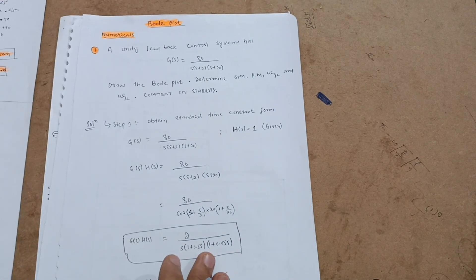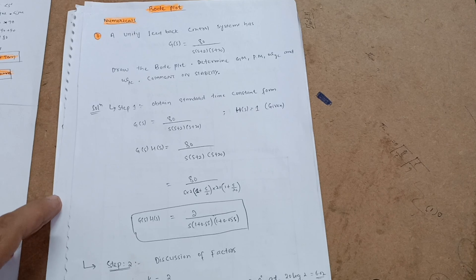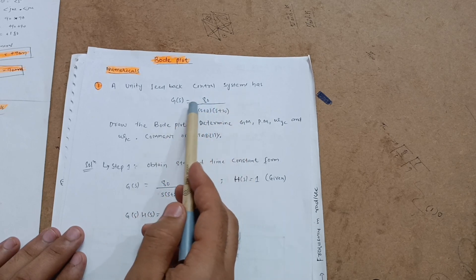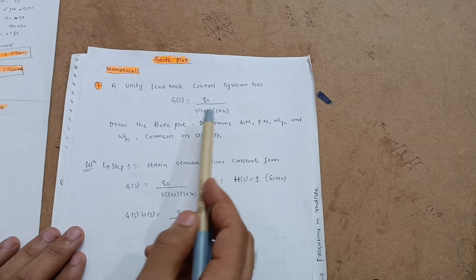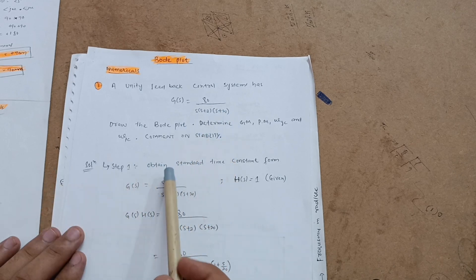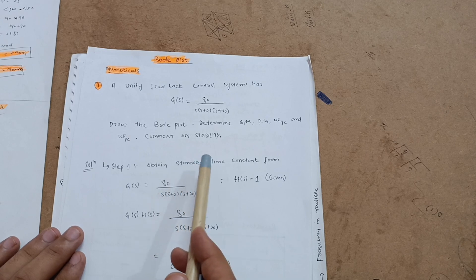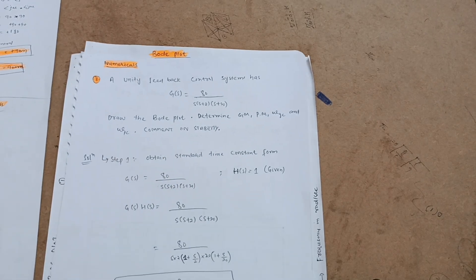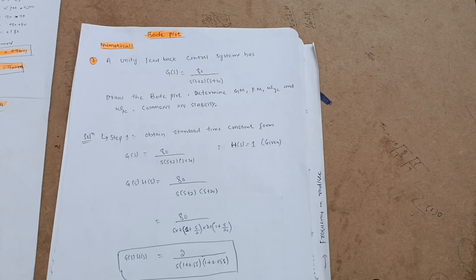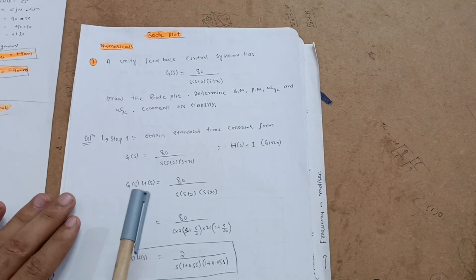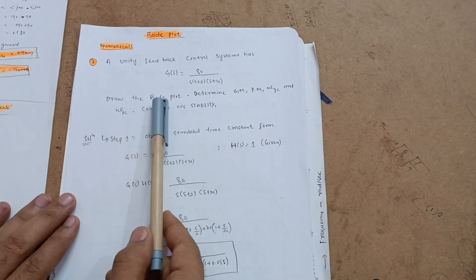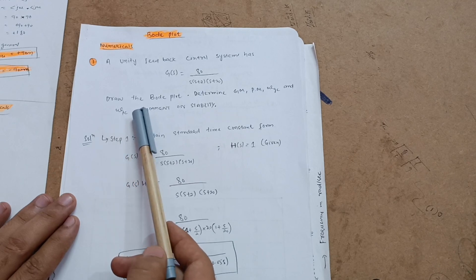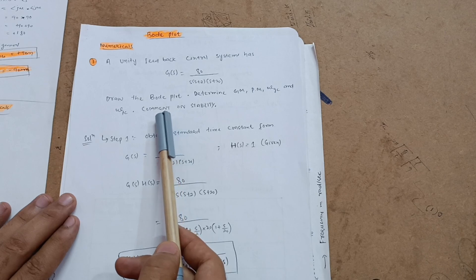I'll take the chart aside and show you value by value how to use it. Let's take the problem first: a unity feedback control system has G(s) = 80 / [s(s+2)(s+20)]. We need to draw the Bode plot and determine gain margin, phase margin, gain crossover frequency, and phase crossover frequency. We also need to comment on the stability.